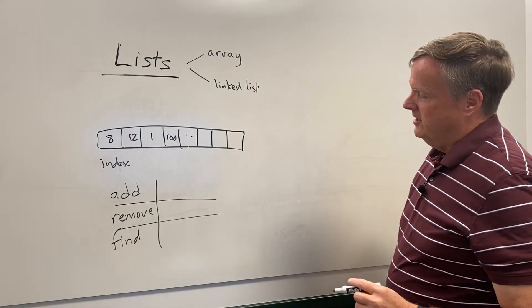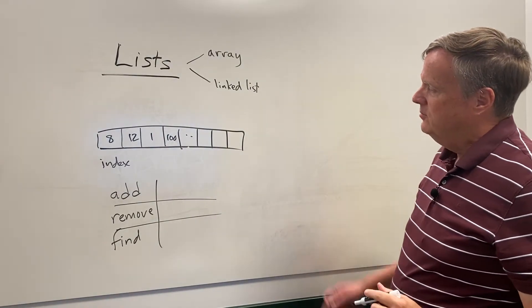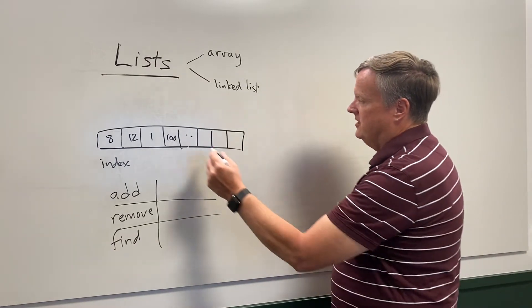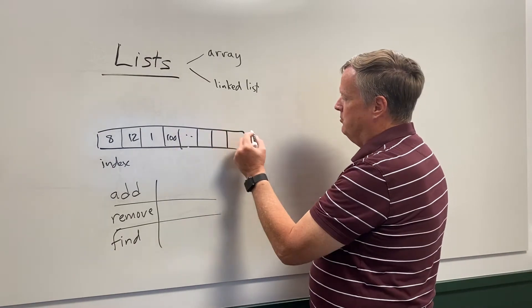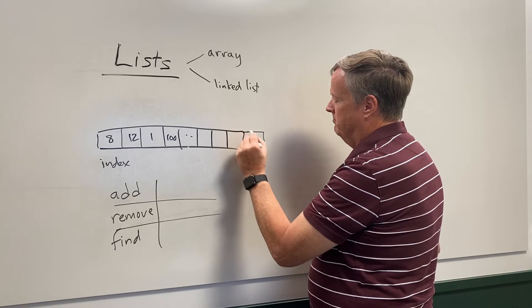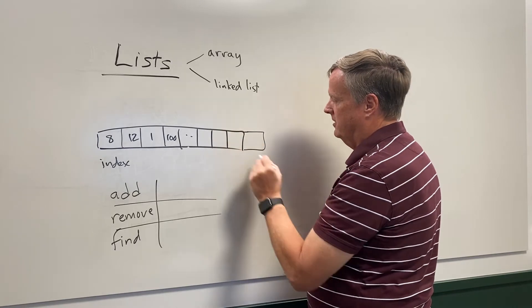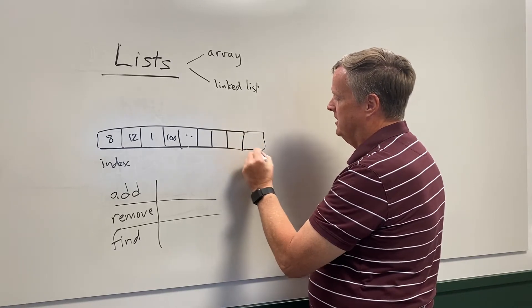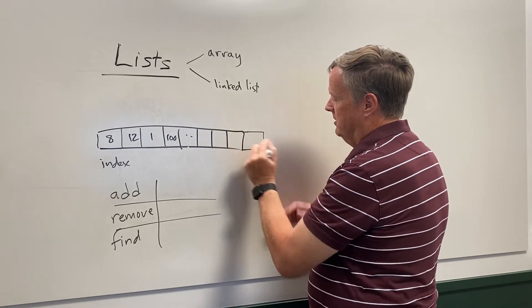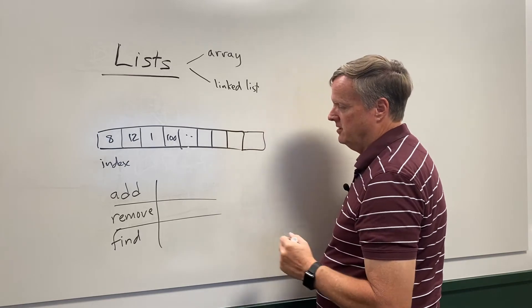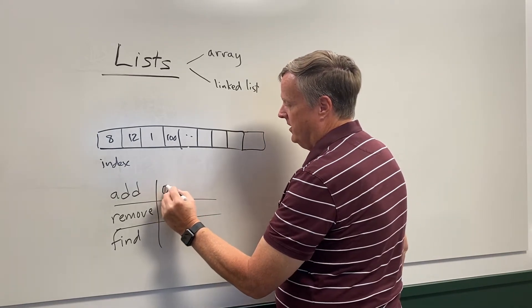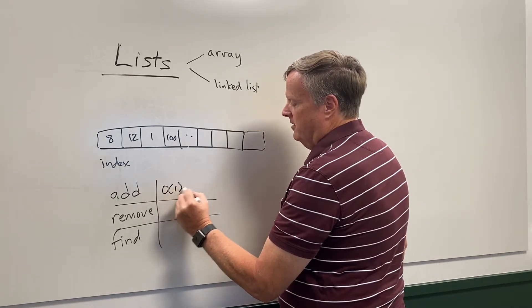If I want to add something to this array list, it depends on where I'm going to add it. If I'm adding to the end, it's pretty straightforward — I just extend the size of the list, extend the memory, and put it there. So adding to the end is very simple and it's constant time.